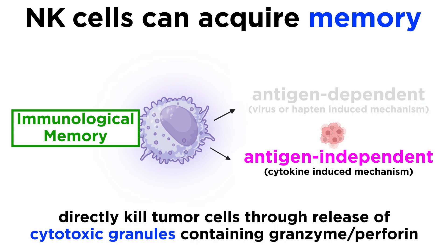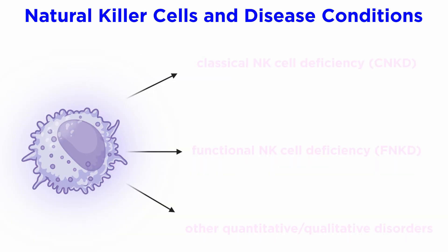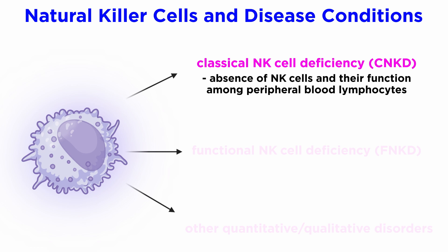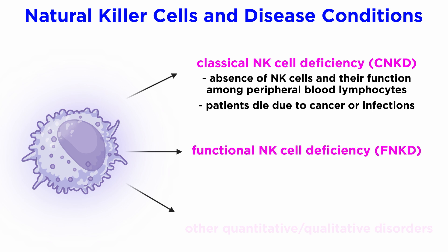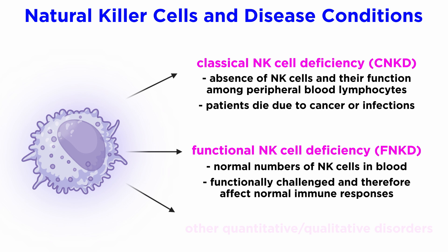With regards to cancer, NK cell function was discovered initially for their ability to kill tumor cells without prior sensitization. They are able to directly kill tumor cells through the release of cytotoxic granules containing granzyme and perforin. Classical NK cell deficiency, CNKD, is characterized by the absence of NK cells and their function among peripheral blood lymphocytes, and patients typically die due to causes such as cancer or infections. Functional NK cell deficiency, FNKD, describes individuals who have normal numbers of NK cells present in peripheral blood, but they are functionally challenged, affecting normal immune responses. Quantitative and qualitative NK cell variations have also been implicated in human autoimmune diseases, thus underlying the importance of these unique innate immune cells.